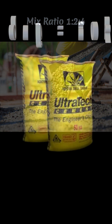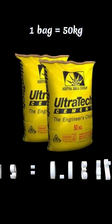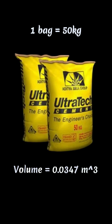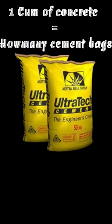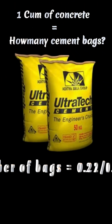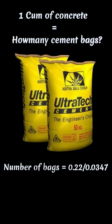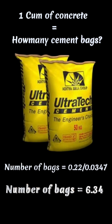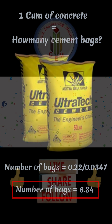Cement volume equals 1.54 meter cube of dry volume multiplied by 1/7, giving us 0.22 meter cube of cement. One bag of cement equals 50 kg, and the volume of one bag is 0.0347 meter cube. Number of bags equals 0.22 divided by 0.0347, which gives us 6.34 bags for 1 meter cube of concrete.